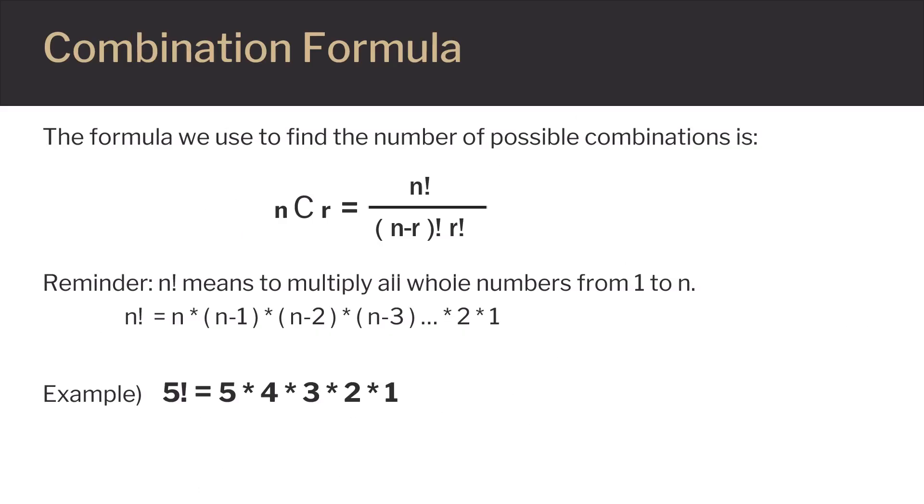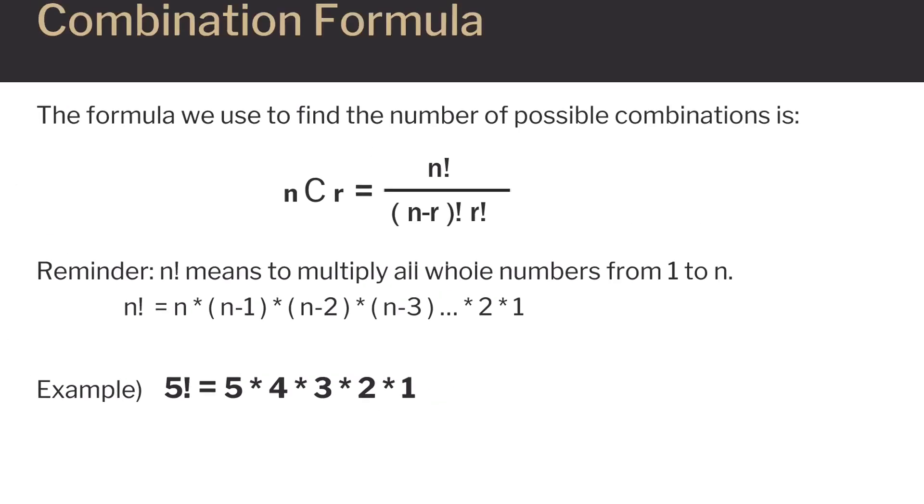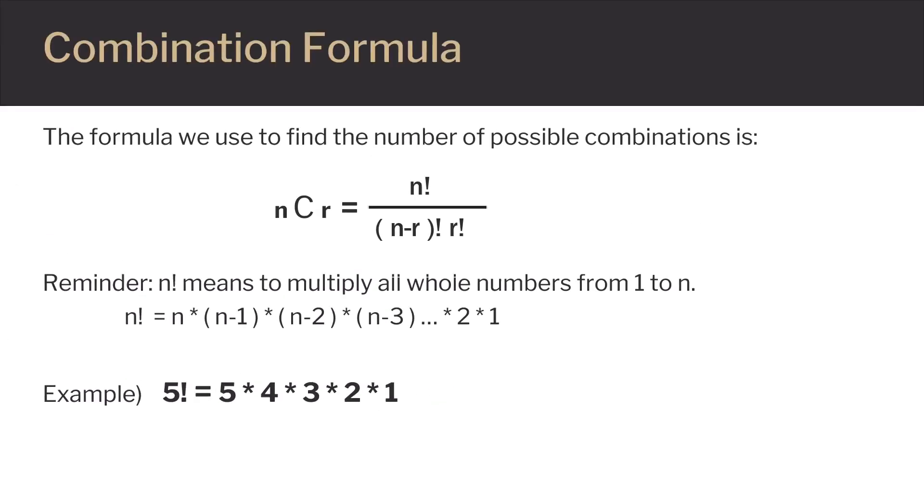This is a shorthand way of taking all the whole numbers from 1 to n and multiplying them together. For instance, 5 factorial equals 5 times 4 times 3 times 2 times 1. So on top we have n factorial and on the bottom we have n minus r factorial times r factorial.